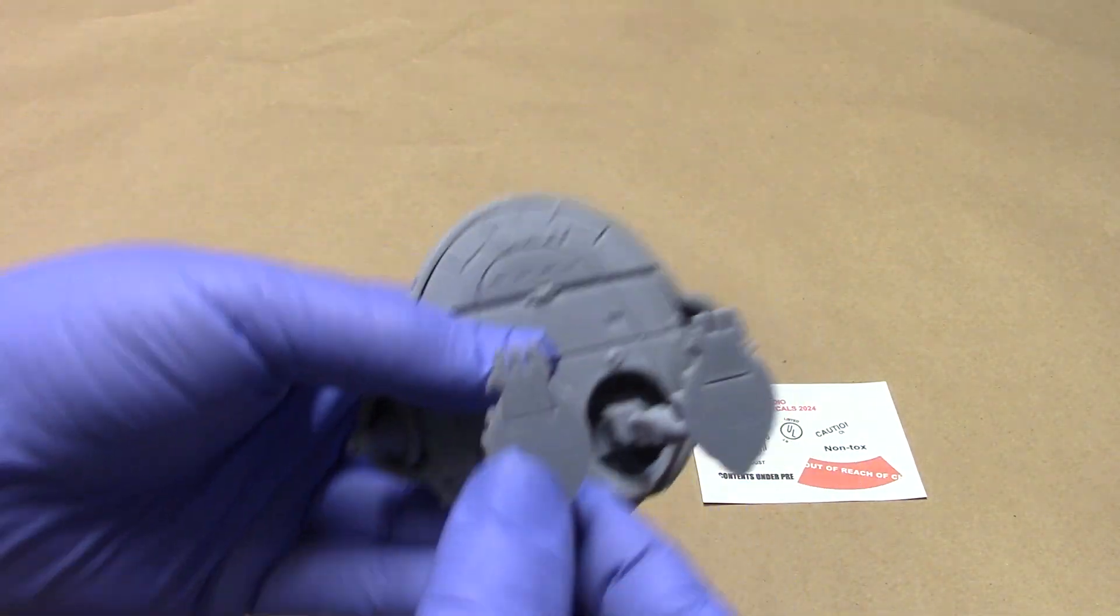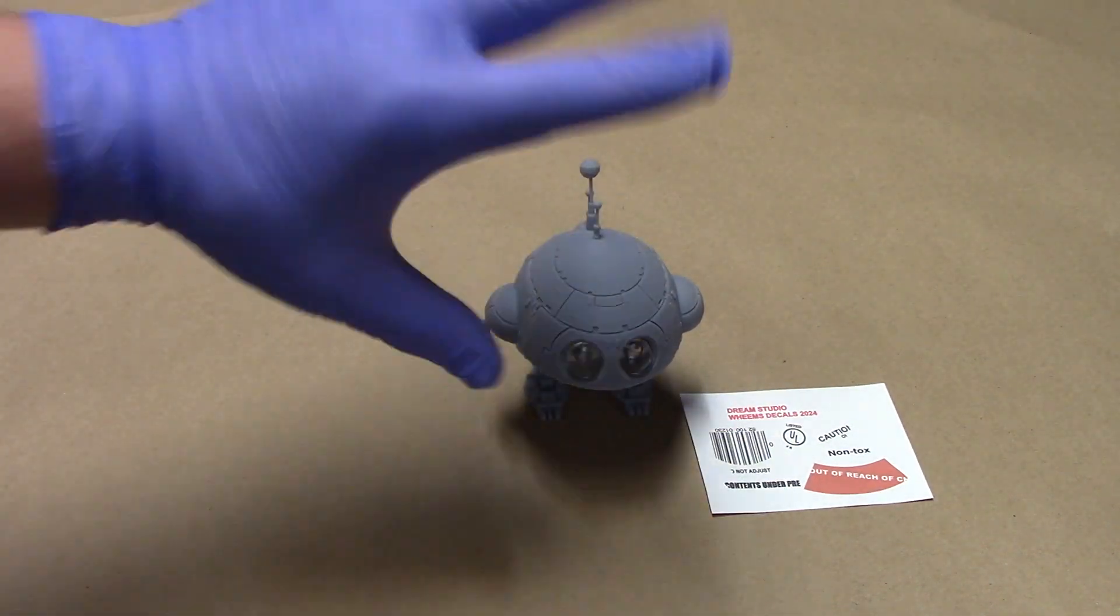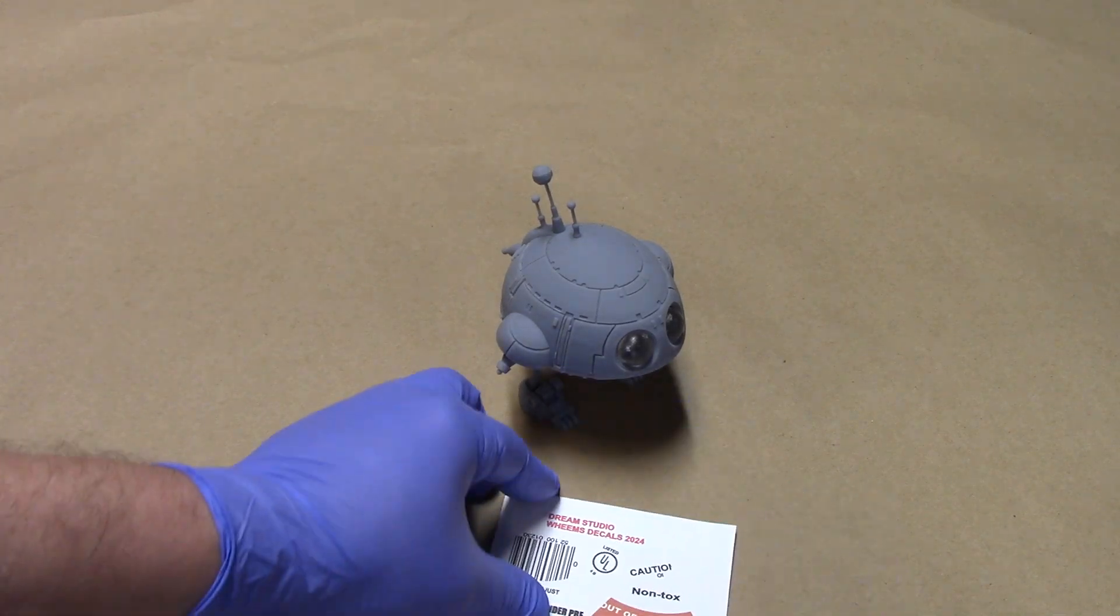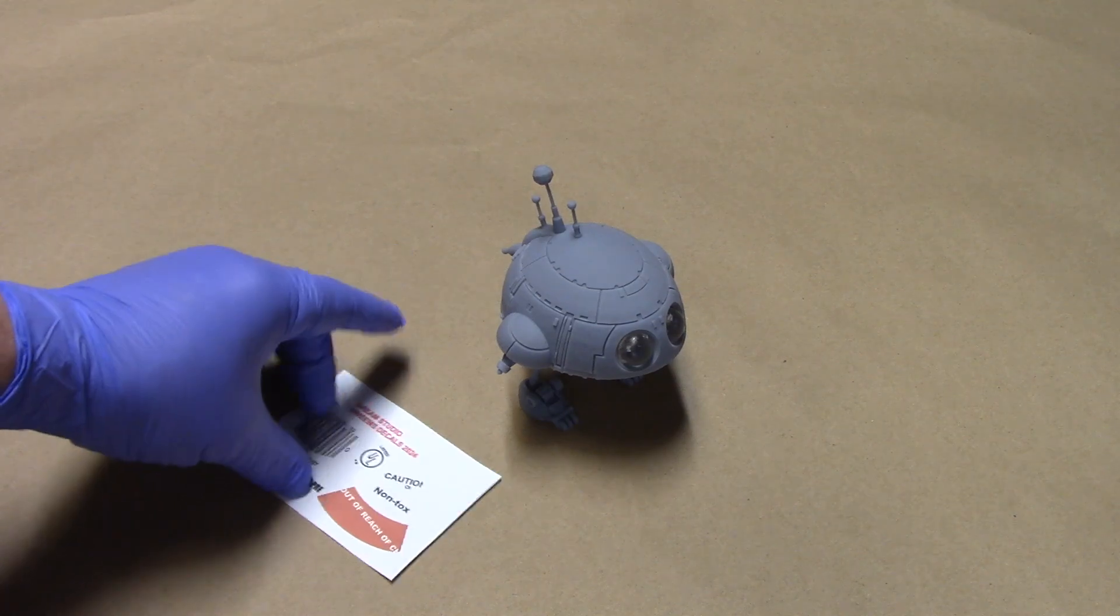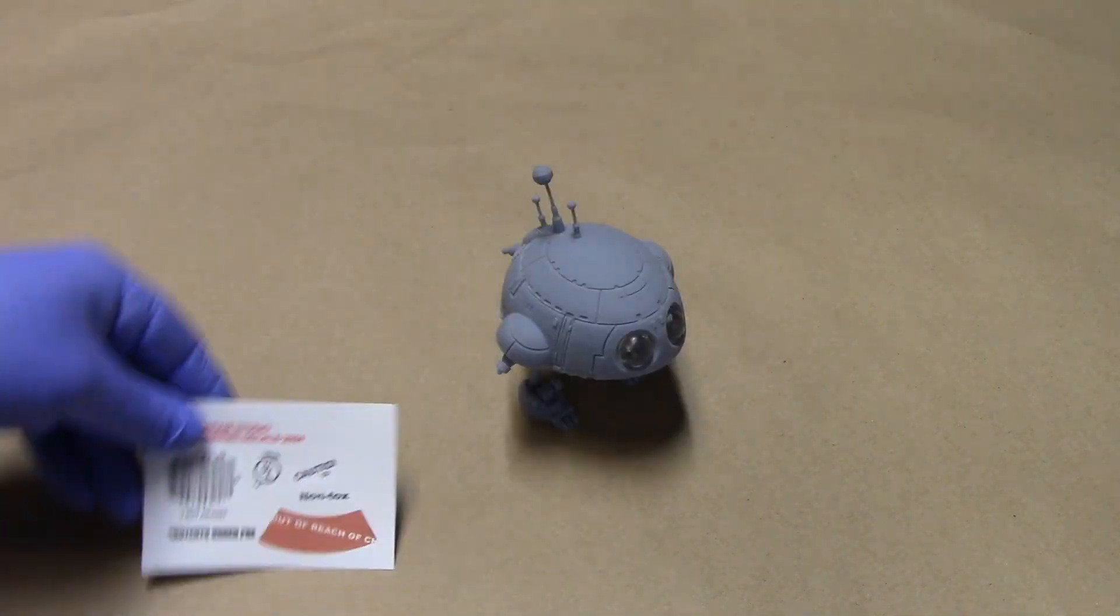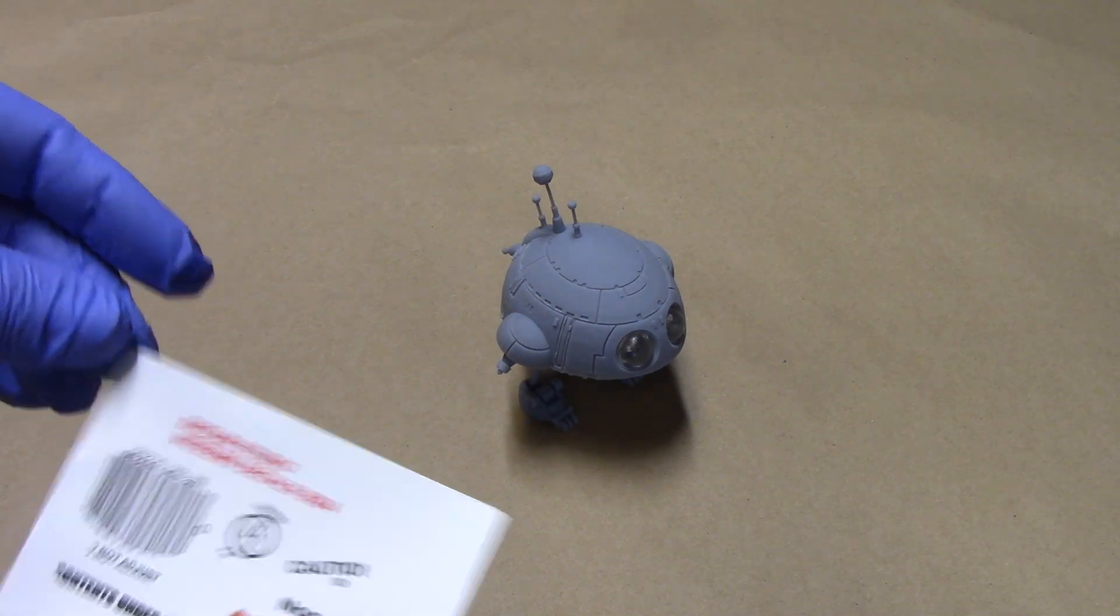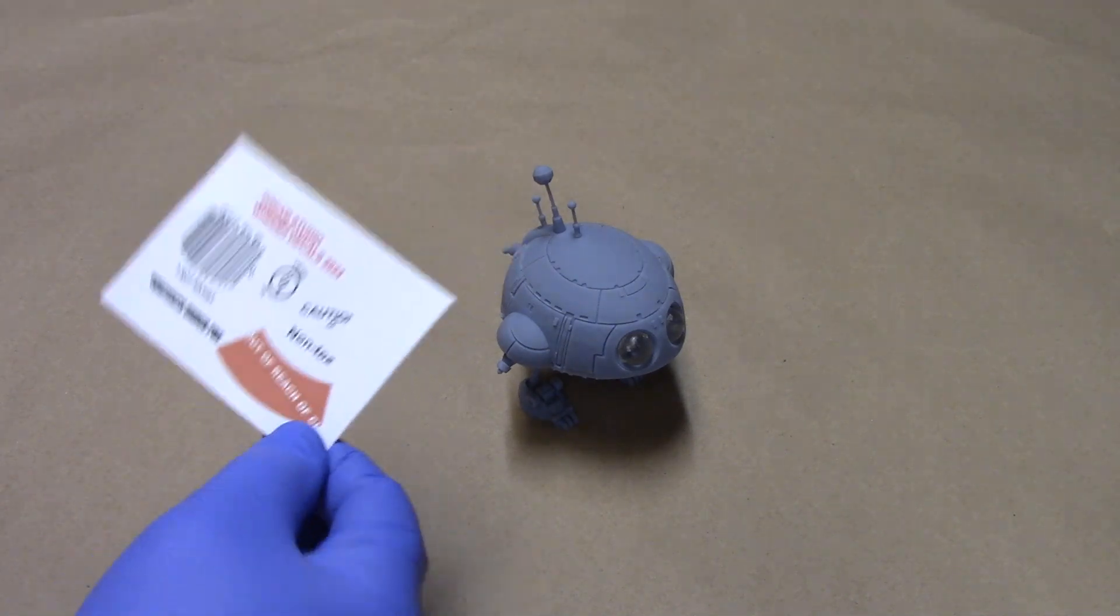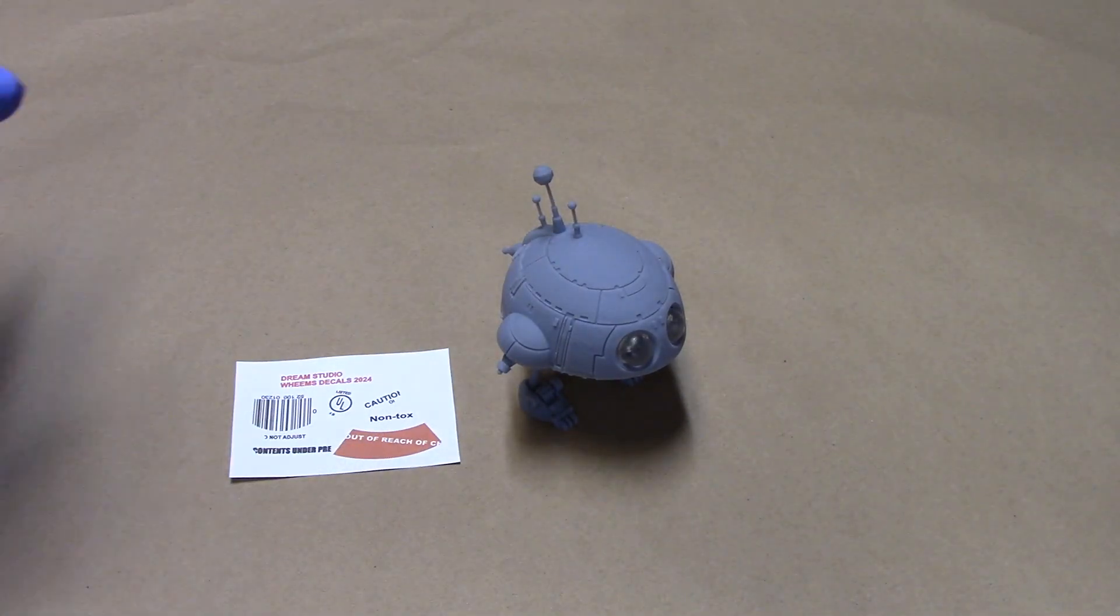But there he is. Weems. I'll have a tutorial on building this guy start to finish, showing you how to use the decals. The decals, if you're getting the digital print of this, you'll get a PDF for these decals. And I'll have a separate tutorial on how to print them on the clear paper, how to seal them, how to work with them with MicroSet, how to apply them. I'll have all that.